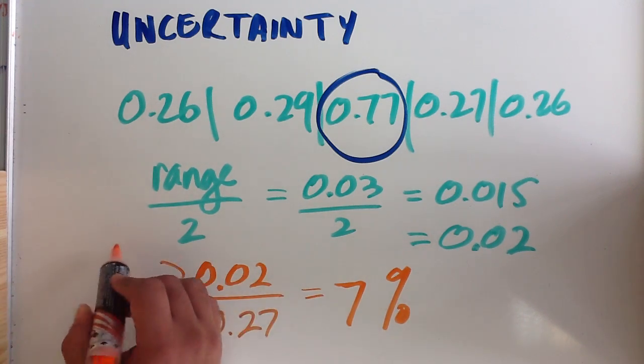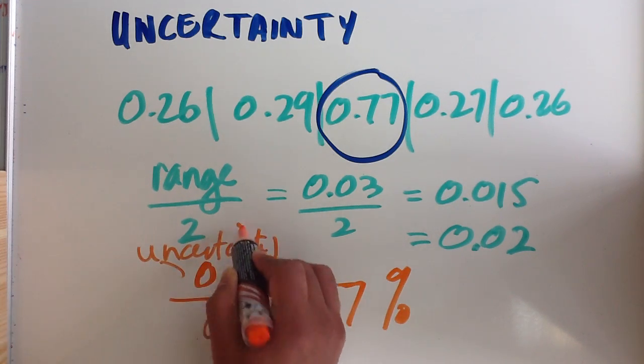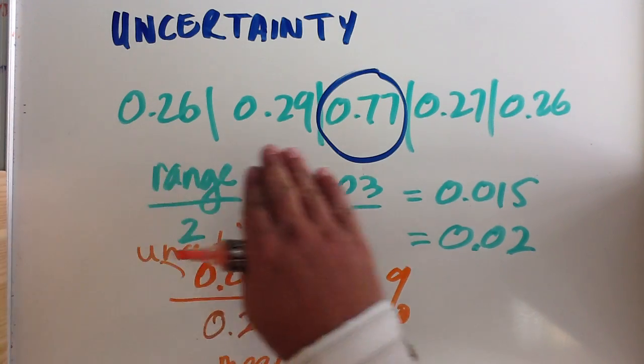So this is your uncertainty value, and that's your mean value. So the key thing to remember when you've got a range of data, rather than just one data point, you have to take the mean value, and your uncertainty is half the range.